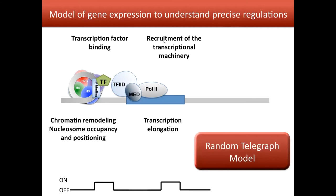To understand how these different processes work, we need to build models. One of the simplest and oldest models of gene expression is the random telegraph model. In this model, transcription can be either off — where no mRNA is produced — or on, where you have accumulation of multiple mRNAs over time. If a cell needs to increase the amount of mRNA produced, the cell has multiple tools available. One possibility is to produce more bursts of transcription.